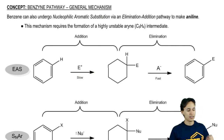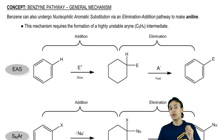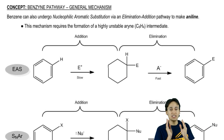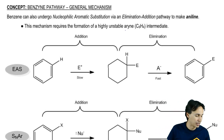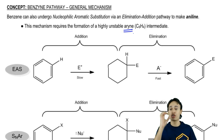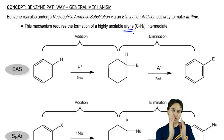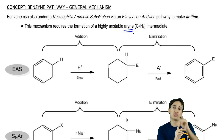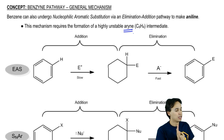Benzene can progress through an elimination-addition pathway, but it's going to make a very unstable intermediate. That unstable intermediate is called an aryne or benzyne because it literally has a triple bond within the ring. Imagine how unstable it is to have a triple bond — triple bonds want a bond angle of 180 degrees, but it's going to be forced into a 120-degree bond angle on that cyclohexane ring.